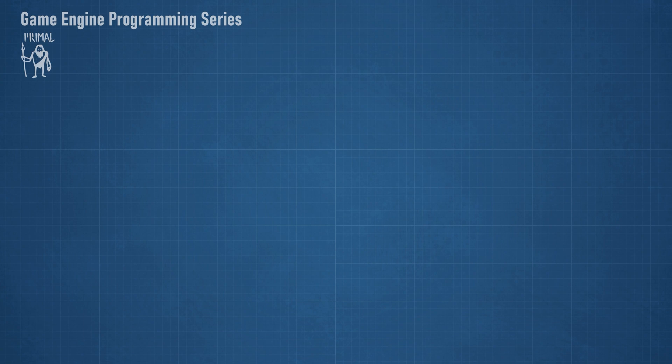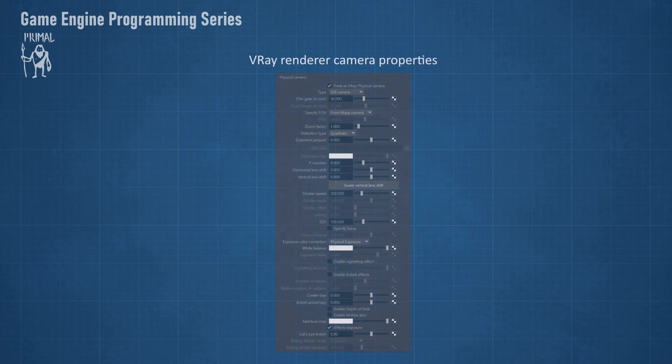In recent years, graphics rendering is becoming more and more based on physical properties of real-world objects — that's where the term physically-based rendering comes from. This approach is not limited to only the objects in a scene, but it can also be applied to lights and cameras. For example, we could model physical properties of a camera such as the shutter speed, lens distortion, and exposure time. Although this is an interesting topic to dive into, it's not really constructive to set up such a camera at this earliest stage of game engine development.